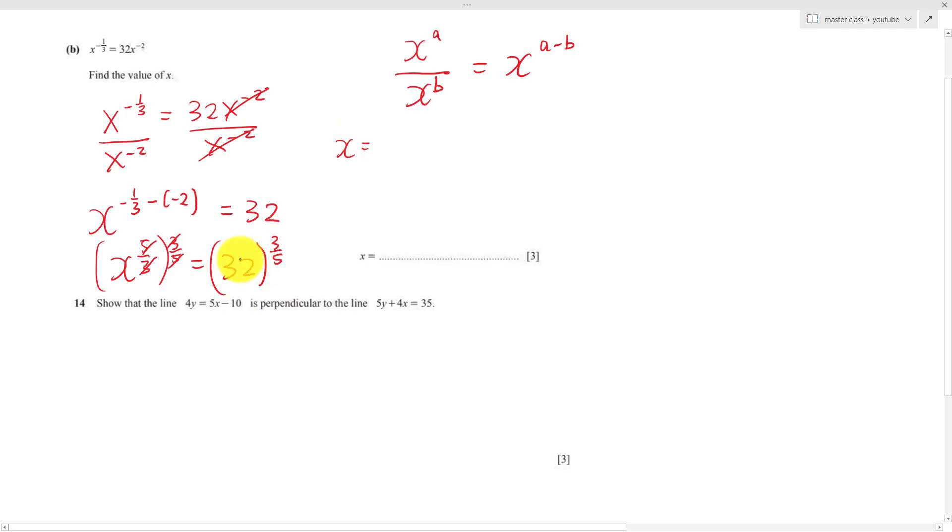How do I know it's 8? It's because 32 is 2 power of 5, and then this is 3 over 5. Cancel out to get 2 power of 3, which is 8. The answer is 8 for the first one.